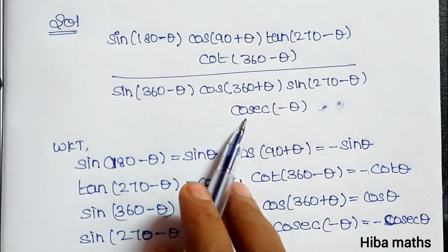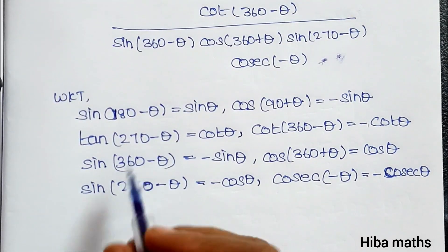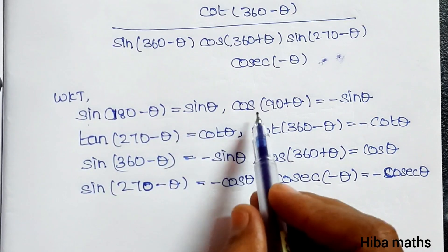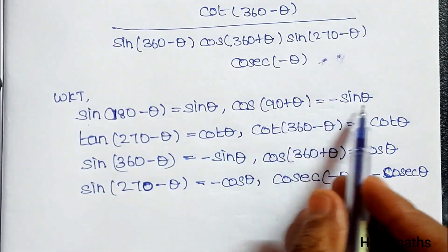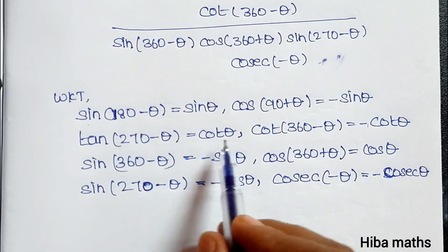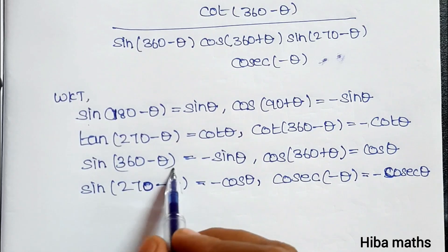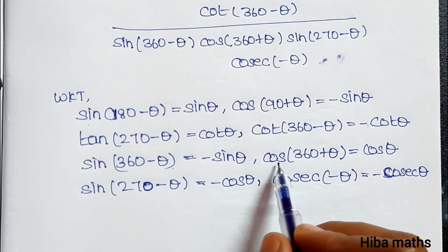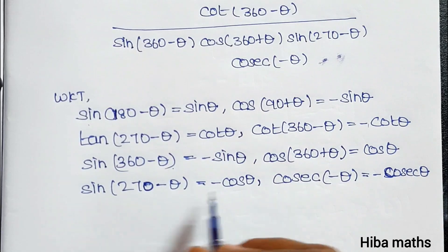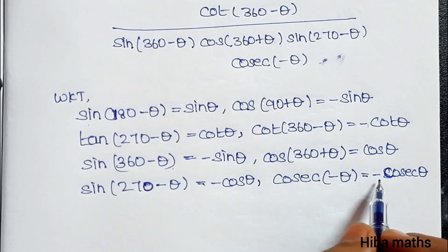We will write the known identities in the table column. sin(180° − θ) = sin θ. cos(90° + θ) = −sin θ. tan(270° − θ) = cot θ. sin(360° − θ) = −sin θ. cos(360° + θ) = cos θ. sin(270° − θ) = −cos θ. cosec(−θ) = −cosec θ.